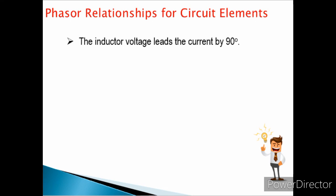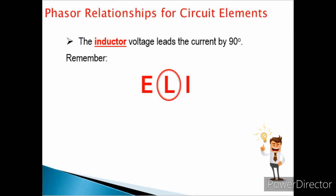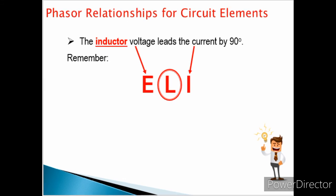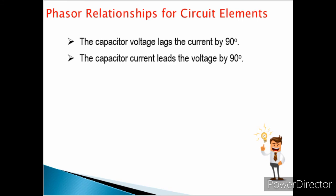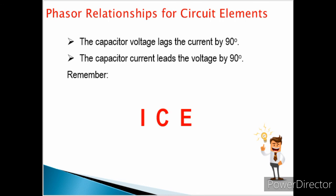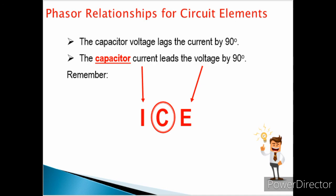Here is how to easily recall the phase relationship for circuit elements. The inductor voltage leads the current by 90 degrees — just remember ELI: E is voltage, L is the inductor, and I is current, so voltage leads current. For the capacitor, the voltage lags the current by 90 degrees, or equivalently the current leads the voltage by 90 degrees — just remember ICE: I is current, C is the capacitor, and E is the voltage.